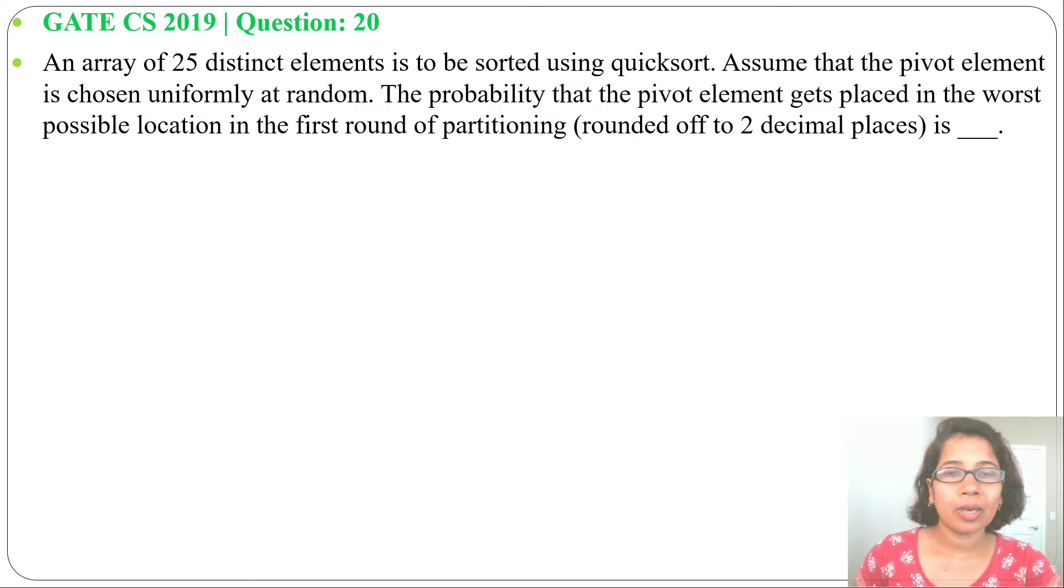if one array is already sorted and we are choosing first element or last element as pivot, then that is the worst case. Or you can say if one array is of random order and we are choosing maximum element or minimum element, that is our worst case.